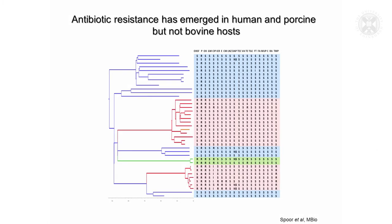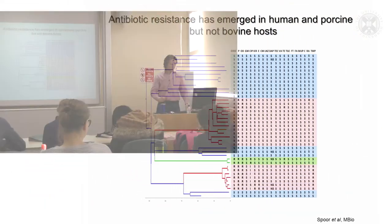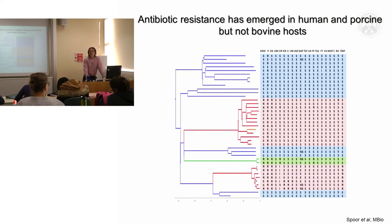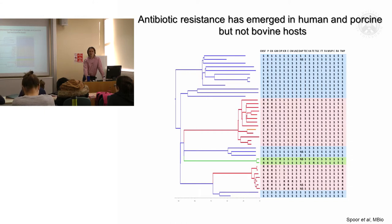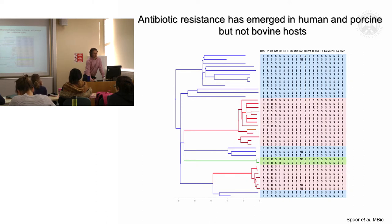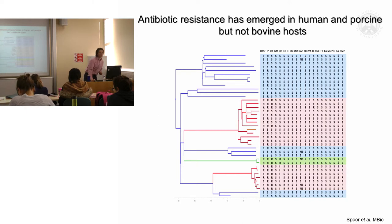The other interesting thing we found from this analysis — shown here in another form of the same tree — is that we looked at levels of antibiotic sensitivity across all these strains. We wanted to know if the MRSA strains found among CC97 isolates emerged in livestock or in human populations. There is quite a lot of antibiotic resistance represented among the human isolates, including penicillin resistance and oxacillin resistance, which is the marker for methicillin resistance. So quite a lot of these are MRSA.